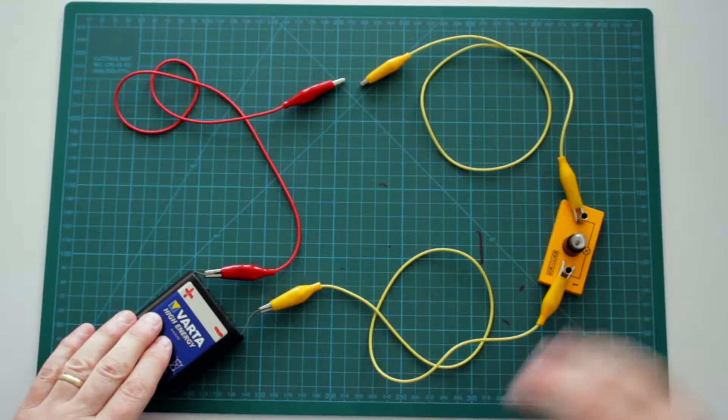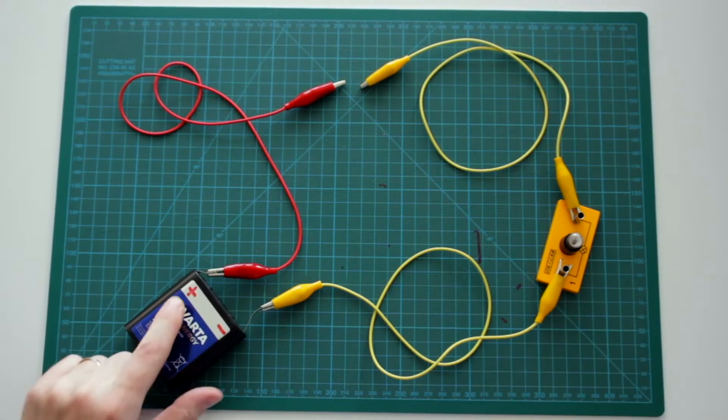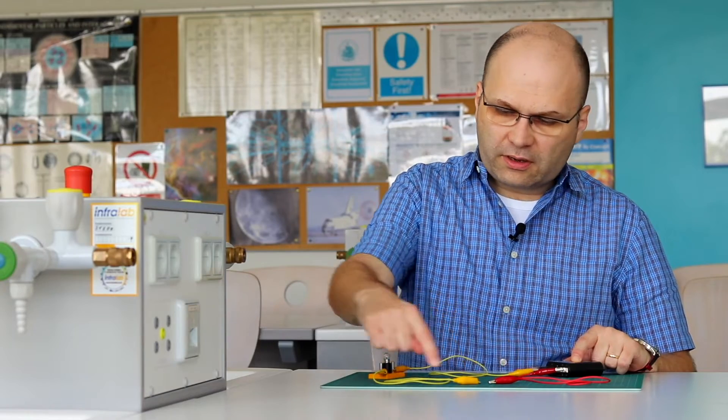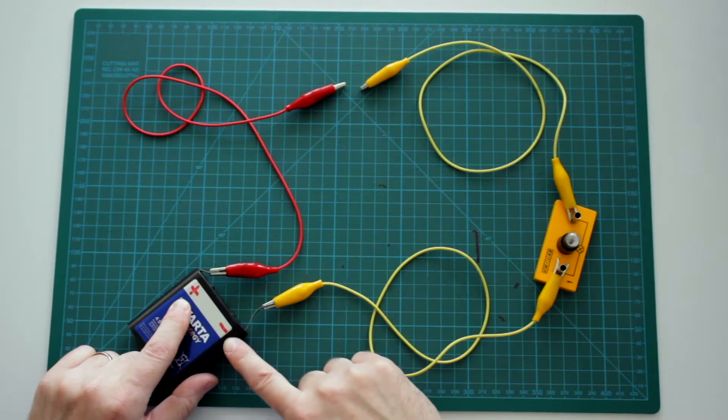Let's now consider a simple circuit consisting of a battery and a light bulb. The conventional direction of the current is from the positive terminal of the battery, through the circuit towards the negative terminal of the battery.